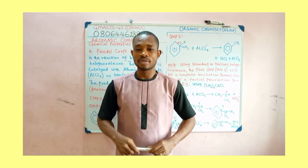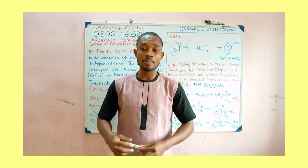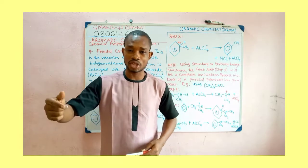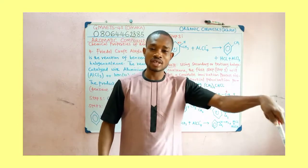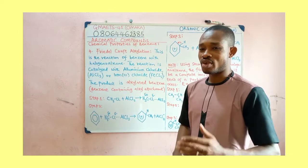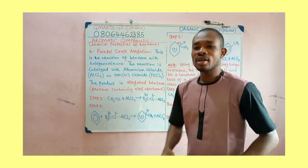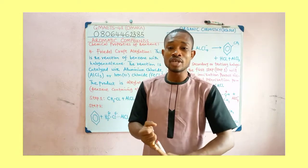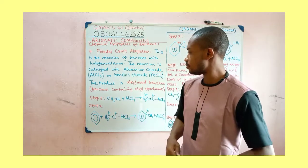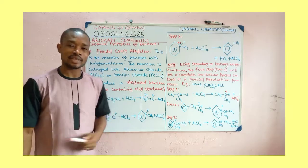The next chemical problem we have on the board is the Friedel-Craft alkylation. The alkylation process is simply the reaction of a compound with a haloalkane, during which an alkyl from the haloalkane is transferred to that compound. That is what we have here in the Friedel-Craft alkylation, which is the reaction between benzene and a halogen-containing alkane. The product obtained in the Friedel-Craft alkylation of benzene is alkylated benzene.